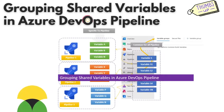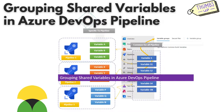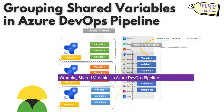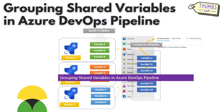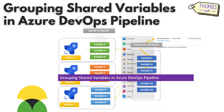The next tip is grouping shared variables in Azure DevOps pipelines. You can have multiple pipelines across multiple projects — for example, working on 10 different applications. Grouping shared variables helps organize and manage common variables across different builds and release pipelines. When many pipelines use common variables, instead of defining variables for each pipeline individually, you can leverage variable groups. Simply navigate to the variable groups tab to get started. It will save you a lot of time when managing multiple DevOps pipelines.